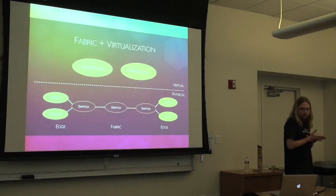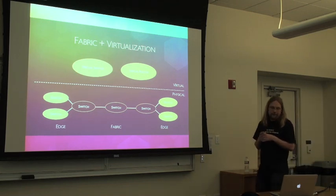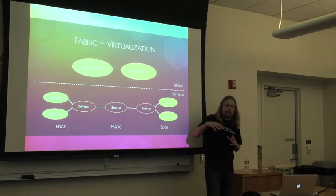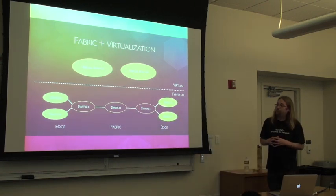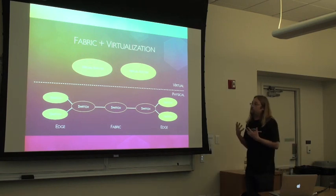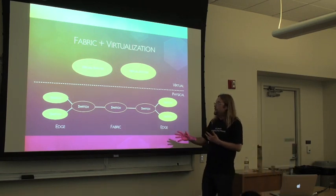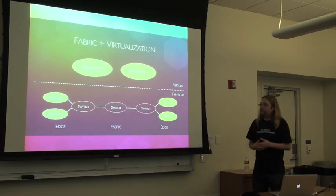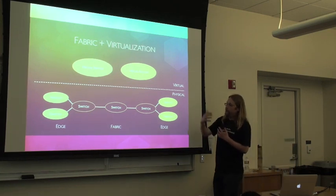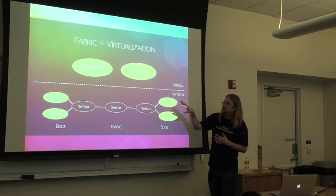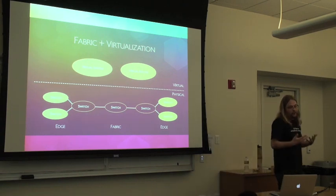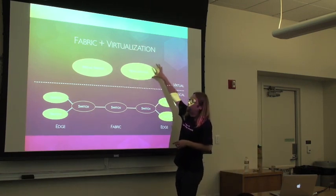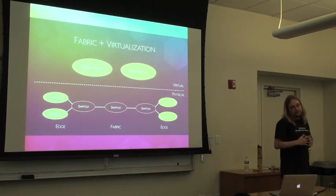So, back to the implementation of virtualization. Nothing says that we have to actually use physical switches in the middle of the network to provide network virtualization for the users. Instead, what we can do is combine the ideas of the fabric and the network virtualization, and just make the core of the network the fabric that simply relays the packets from one edge of the network to the other edge. And the edges are the ones that provide all the semantics for the user. In this case, they would be the ones that provide the user with these abstractions — these logical topologies to connect their VMs to.